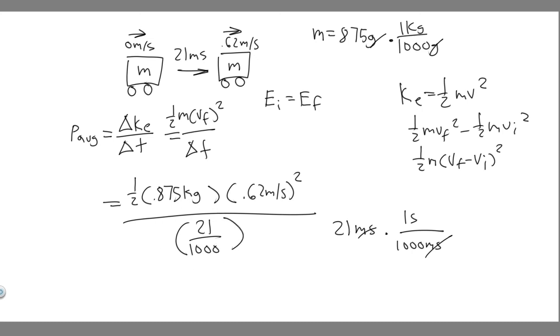So go ahead and do this. Do 1/2 multiplied by 0.875 times 0.62², then divide by 21 divided by 1,000. If you do this, you'll get 8.008333 and so on.